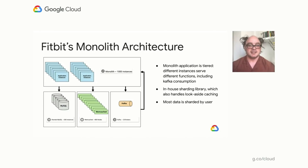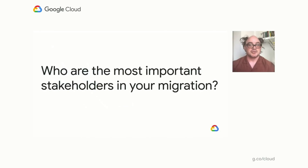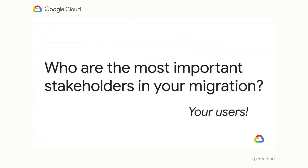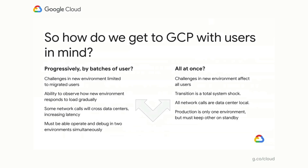Now that we know what the application looks like, we thought about what it would look like for us to move and who we should be thinking about as we're moving. The most important stakeholder in the move is your users. Sometimes doing the best thing for your users is not the easiest thing technically, but that should be the thing you do first. So how do we get to GCP with our users in mind? We thought about two different ways: doing it progressively — moving user by user or batch by batch — or doing it all at once.